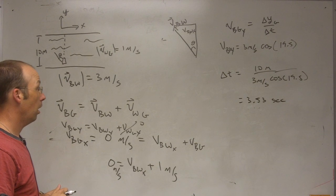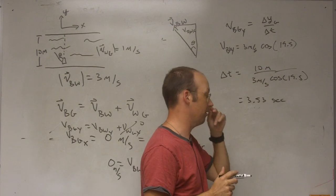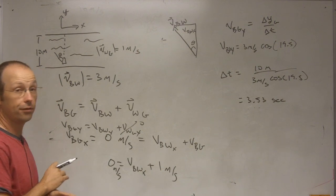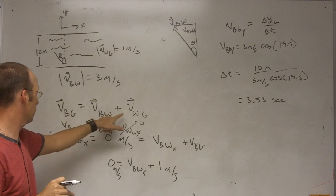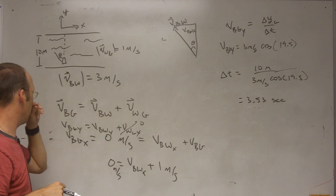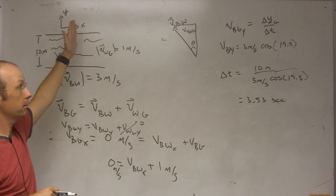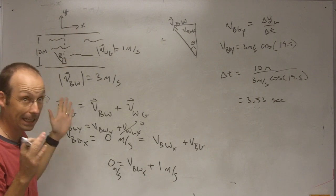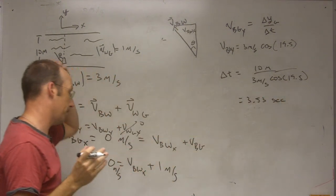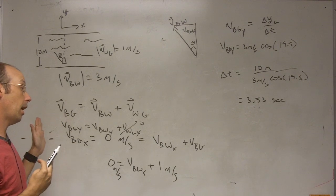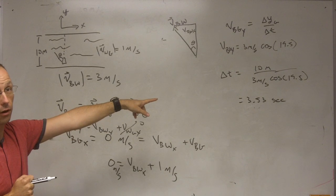Does that make sense? The units work - meters cancel, and 1 divided by 1-over-seconds gives seconds. It makes sense because if there was a pond instead of a river, you'd aim straight across since the velocity of the water with respect to the ground would be 0. Going 3 meters per second across a 10 meter pond would take 10 divided by 3, which is 3.33 seconds. Now I'm aiming a little to the left, so it's going to take me longer - 3.53 seconds is longer than going straight across in still water, so that's correct.